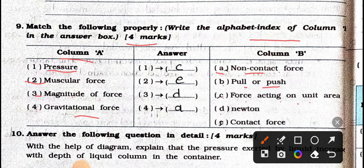Now see the answers: Pressure matches with C, force acting on unit area. Muscular force matches with E, contact force. Magnitude of force matches with D, Newton. Gravitational force matches with A, non-contact force.